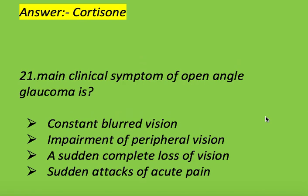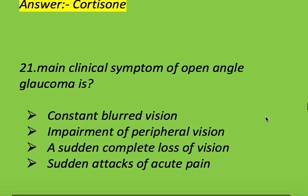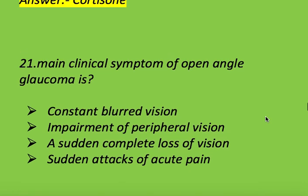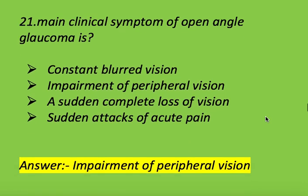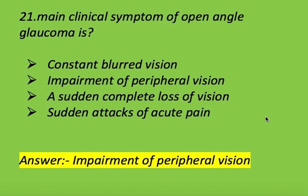Next question: what is the main clinical symptom of open angle glaucoma? Options: constant blurred vision, impairment of peripheral vision, a sudden complete loss of vision, and sudden attack of acute pain. Right answer is impairment of peripheral vision.